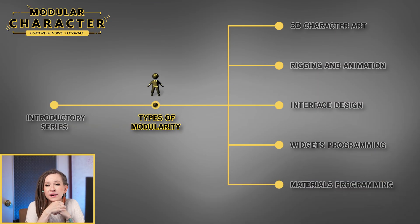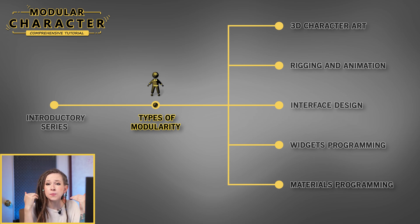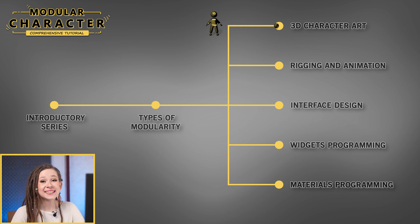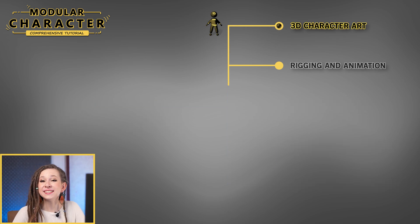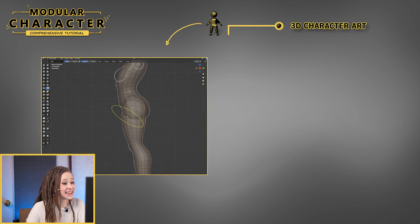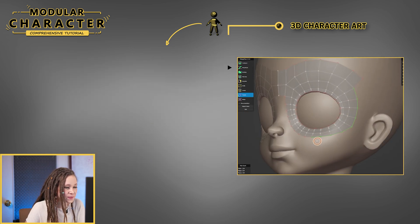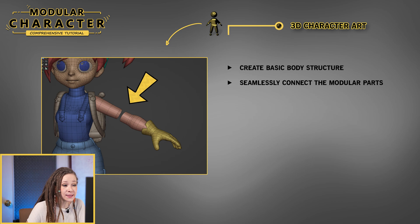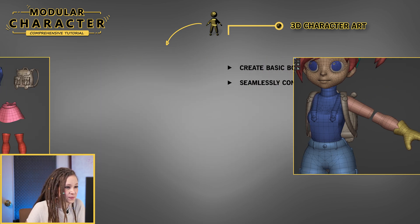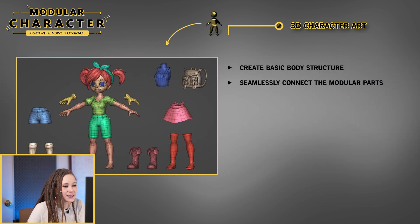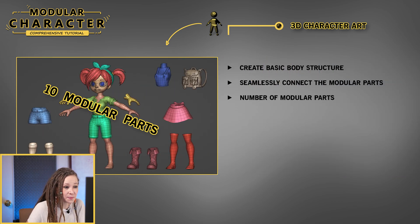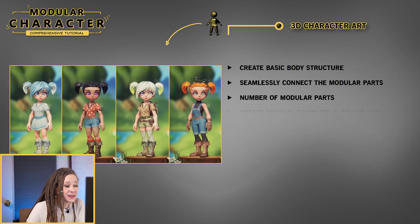Now, where should we start? It can be pretty challenging to figure out how to approach such a big and complex project. We can divide the project into different types of tasks. 3D character art: we'll start by creating the basic body structure, then explore how to seamlessly connect the modular parts, decide on the number of modular parts, and finally create several complete clothing sets. I will be sculpting in Blender and texturing in Substance Painter.